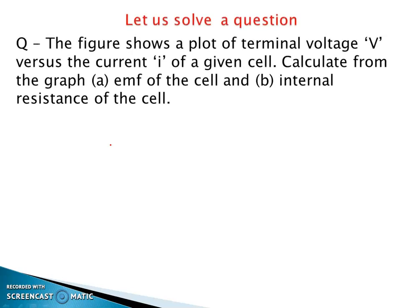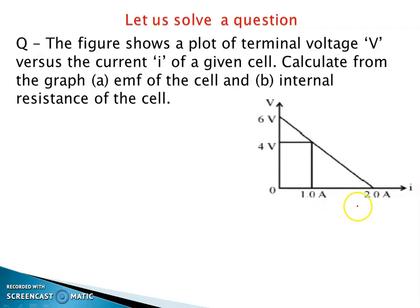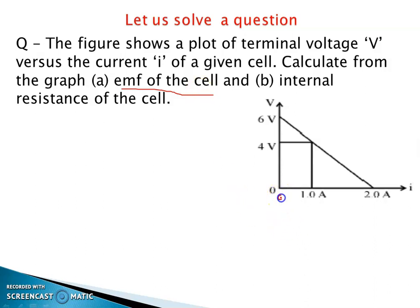Now we are going to solve a question based on a current versus voltage graph, where voltage is on the x-axis and current is on the y-axis, giving a straight line. We have to find the EMF of the cell. When there is no current in the cell, the maximum potential difference is the EMF. So current should be taken as 0. At zero current, the voltage reads 6 volts, so EMF is 6 volts.